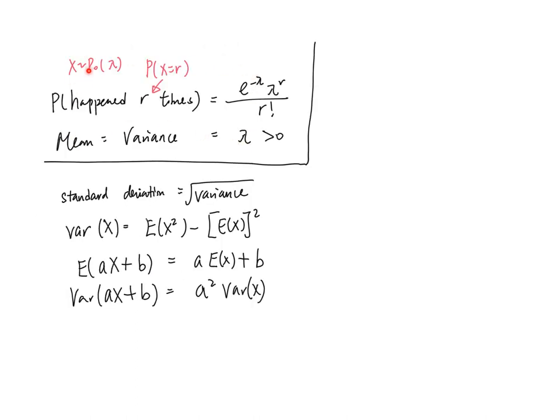You just learned about Poisson distribution, I believe you'll remember it, but I'm not sure if you remember the old material. For example, what is the definition of standard deviation? It's the square root of variance. Or given these formulas, do you remember how to calculate variance?